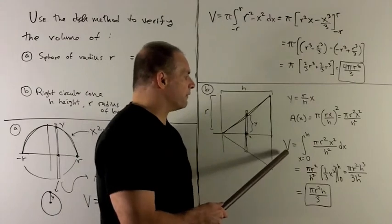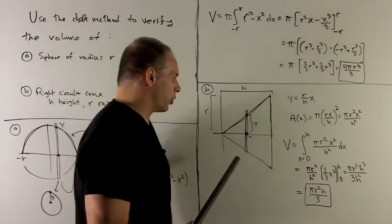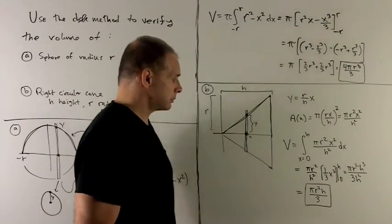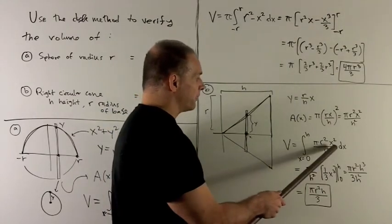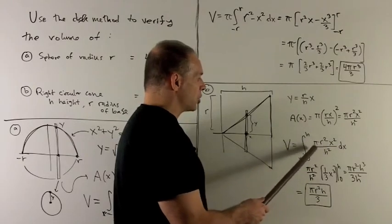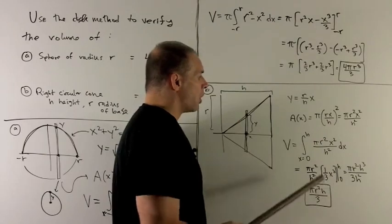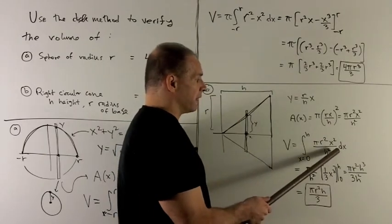We stick this into our volume formula. Here, we're going to integrate from zero to h. So I take the antiderivative here. Let's note pi r squared over h squared is a constant, so I can bring that out in front. So all I need to do now is find the antiderivative of x squared.